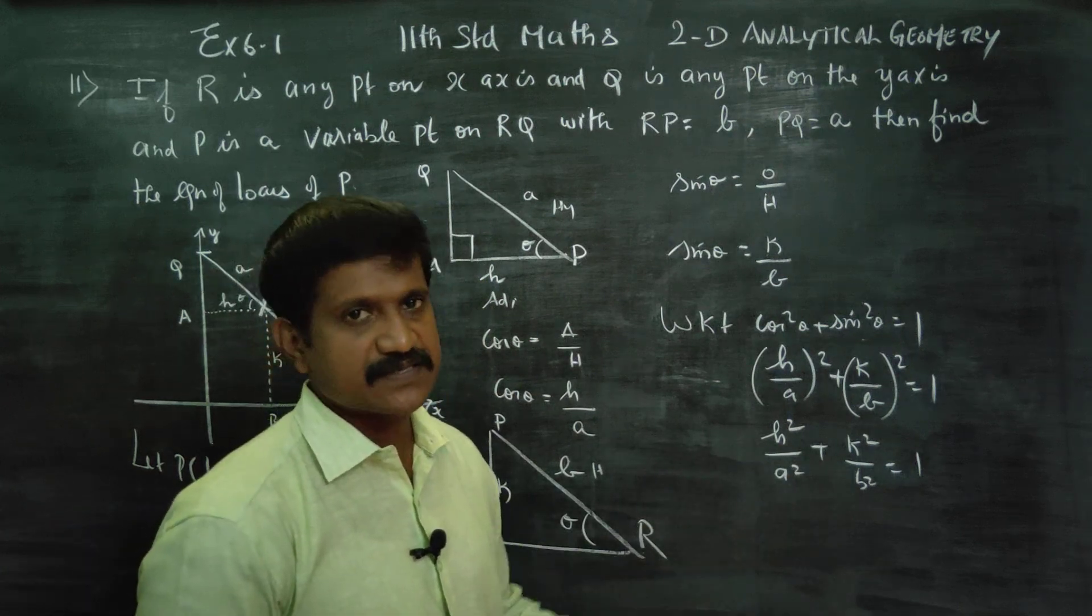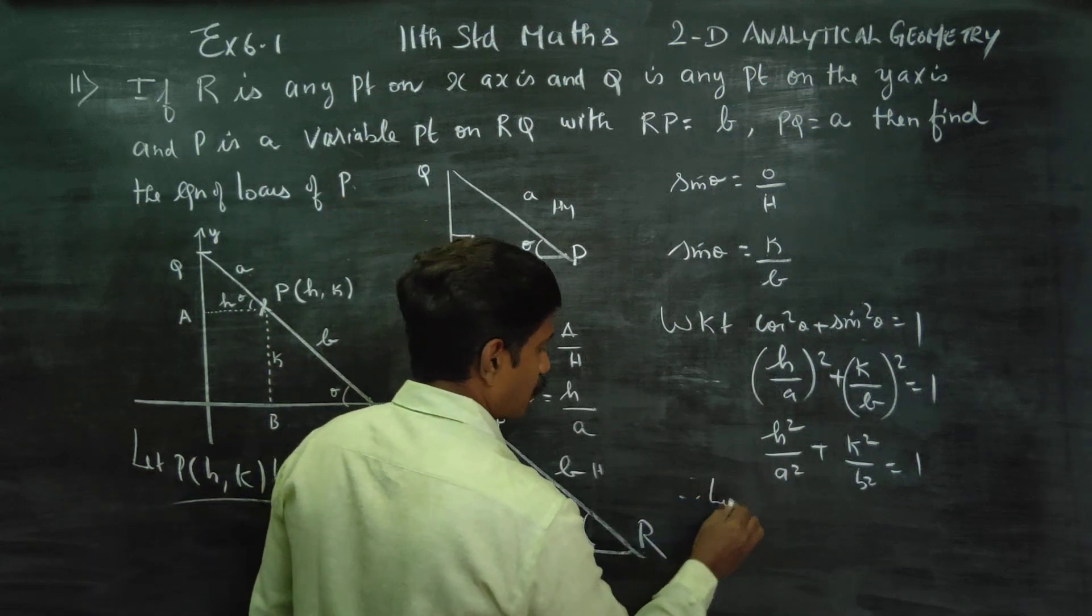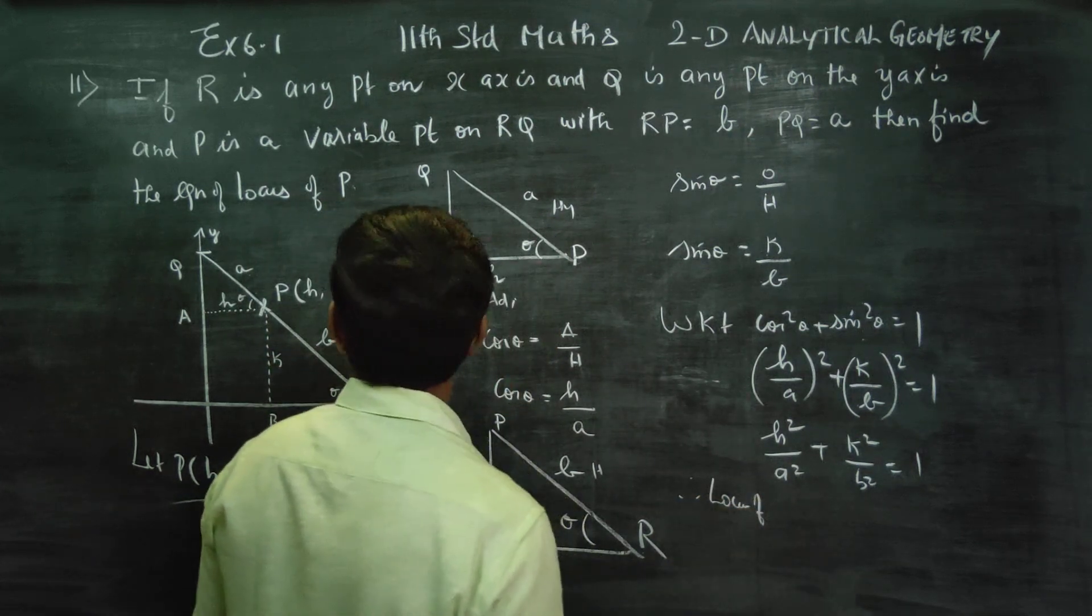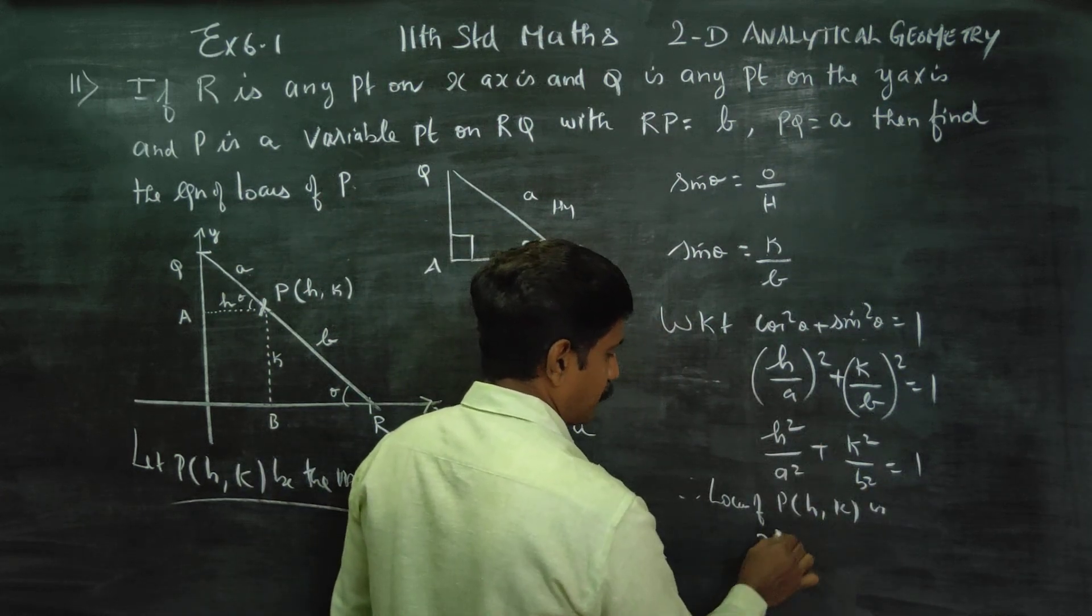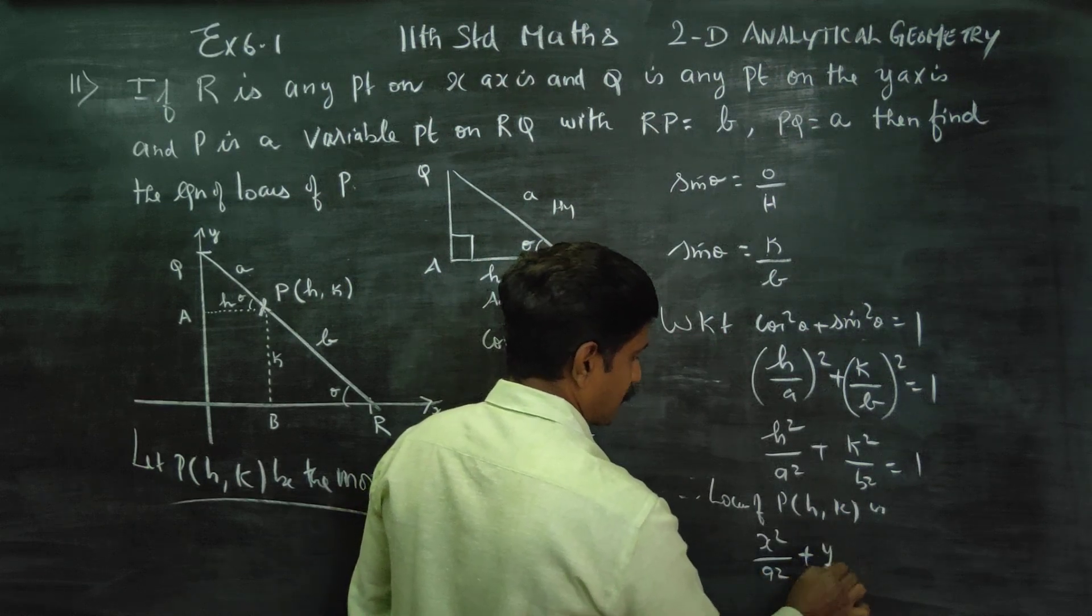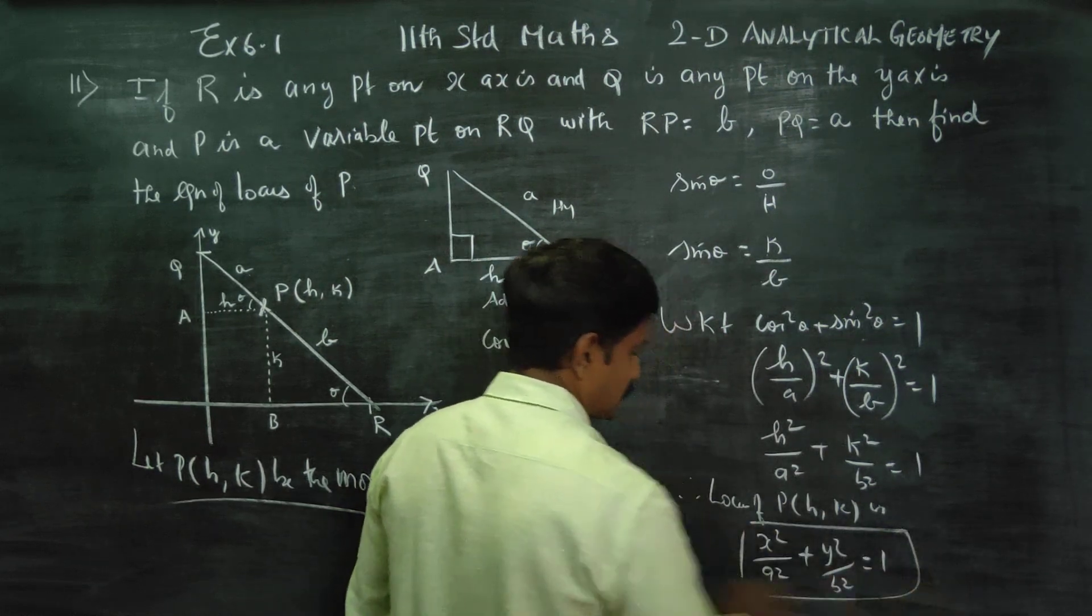You have to replace H and K by X and Y. Therefore, the locus of P(H, K) is: X square by A square plus Y square by B square is equal to one. This is your answer.